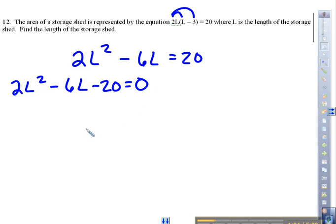Now we're ready to solve. I see a GCF. You could use quadratic equation. Your a is 2, your b is negative 6, your c is negative 20. I do see a GCF. I'm going to factor that out since they didn't tell me what method to use. I'm going to factor out 2, and I'm left with L squared minus 3L minus 10.